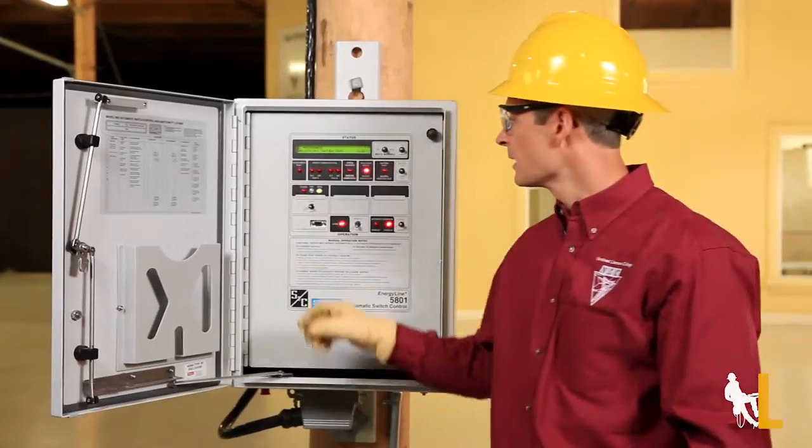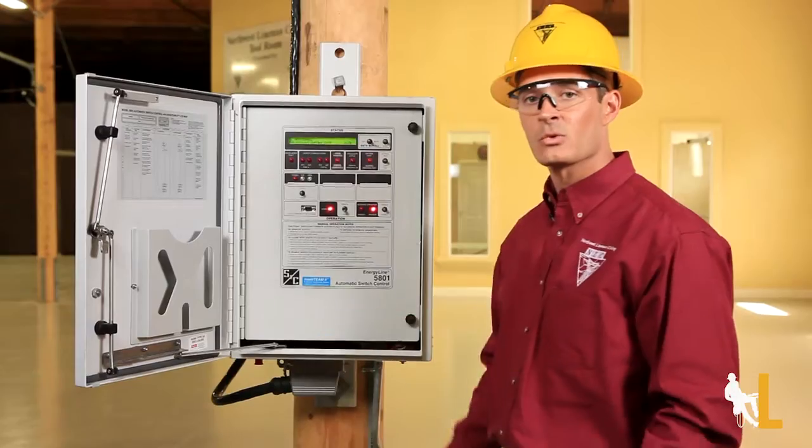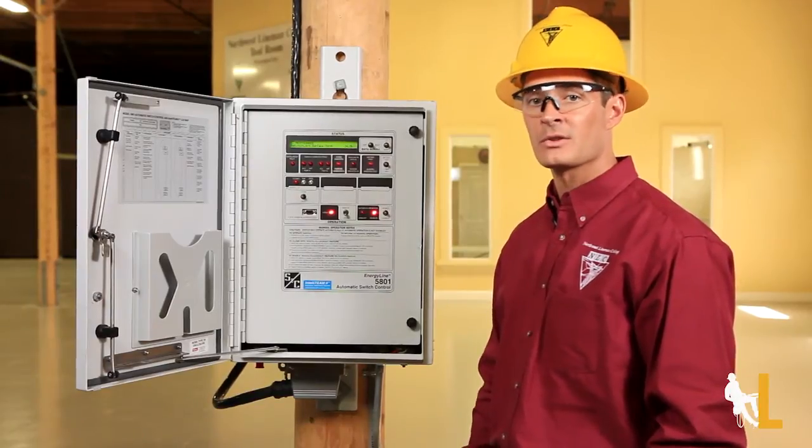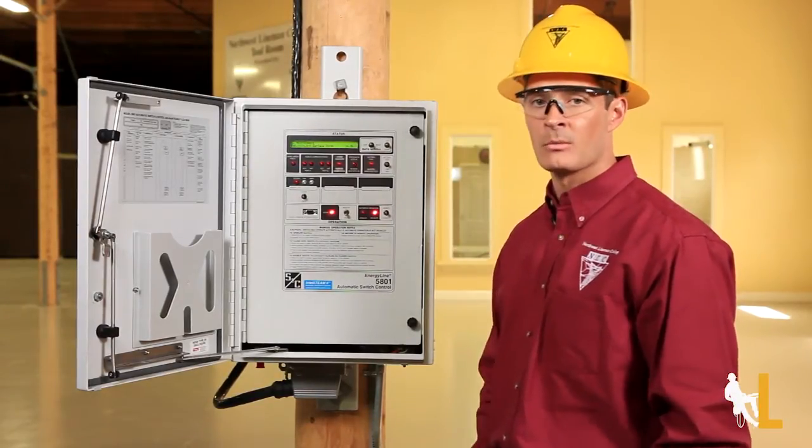If you open the panel and the trip light is on, that means that the switch is automatically open because of a problem on the line. Once the problem is clear, you can either close in the switch using the control panel or have SCADA do it remotely.